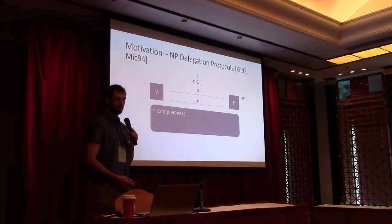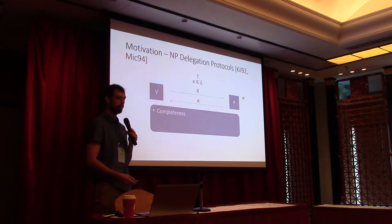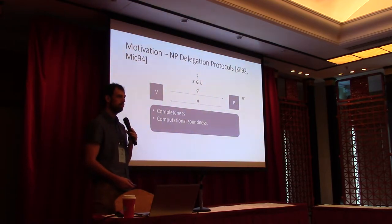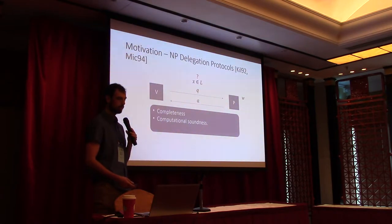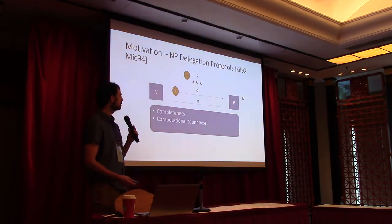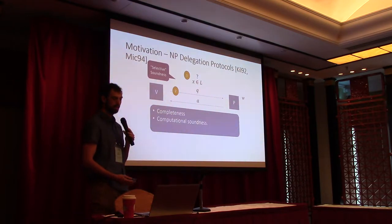We want completeness — if the instance is in the language, then in the honest setting the verifier will always accept. We also want soundness — if X is not in the language, then for every efficient adversarial prover P, the verifier would always reject with high probability. We can consider two flavors of soundness. In the first, more common one, we first fix the instance, then the verifier sends queries, so the instance is independent of the verifier's queries. This is called selective soundness.